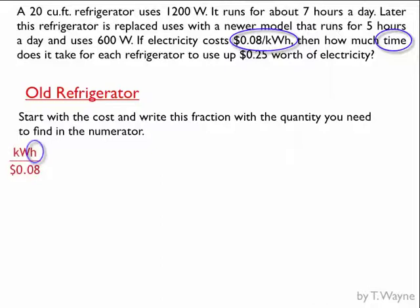So I'm going to write this fraction upside down as kilowatt hours over 8 cents. And you can see the time, the hours, is going to be the numerator. Which means when I solve for my answer, it's also going to have units of hours.